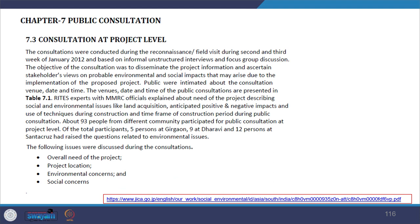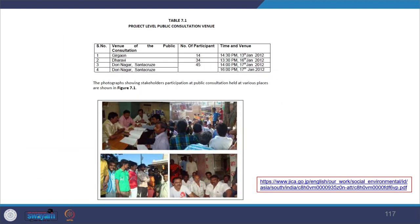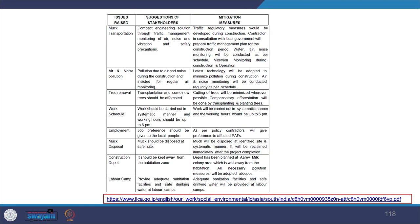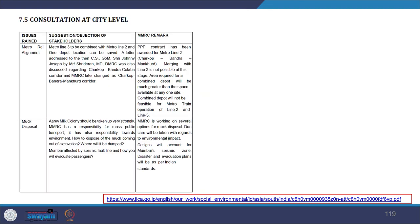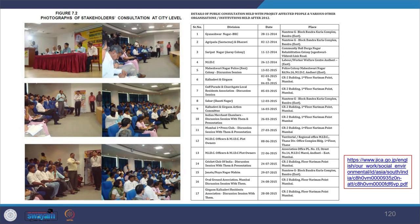As required by JICA, a thorough public consultation was conducted at both the project level and city level. Photographs document where consultations took place; identified issues raised by stakeholders, suggestions made, and mitigation measures taken are all recorded. City-level consultations are documented with dates, places, inputs received, and actions taken. Minutes of meetings are also documented.